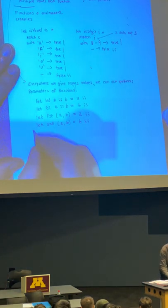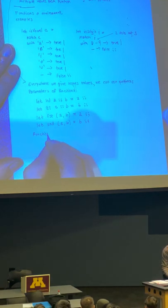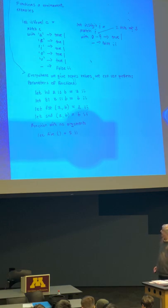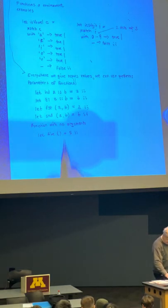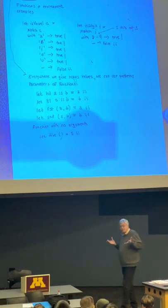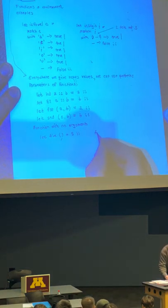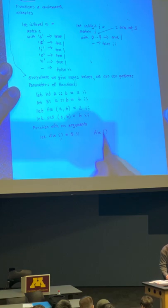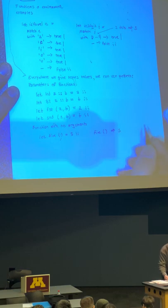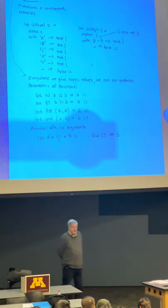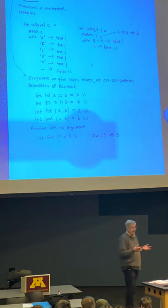This is actually the reason why we can have functions with no arguments. Let's say I want a function that takes no arguments and always returns five. That's why I can put the unit object here to indicate there are no arguments, even though OCaml thinks all functions have one argument. If I wanted to call this, I'd write something like that, and the unit object would match that pattern and I'd get back a five.